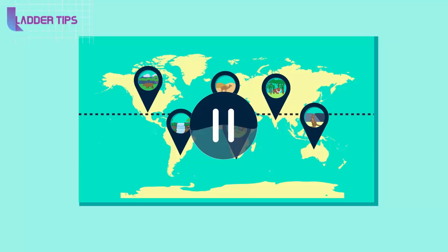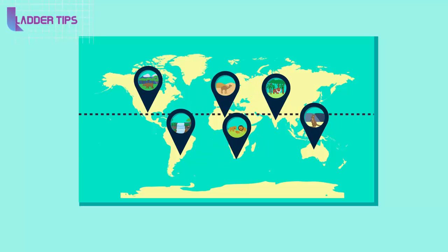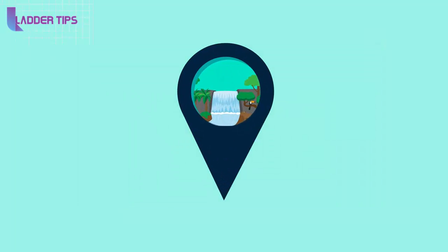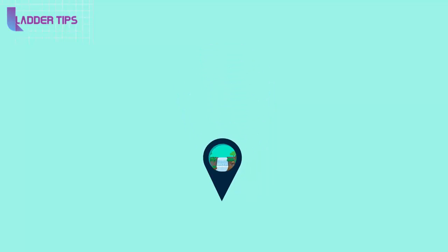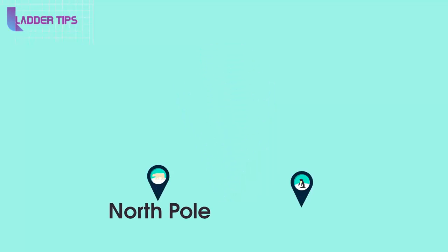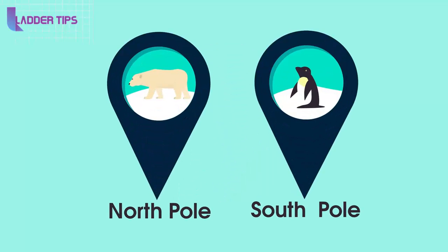Habitats at the equator, such as tropical rainforests, usually have the highest biodiversity. So if you thought habitats at the north or south poles, such as the polar desert, you're correct.